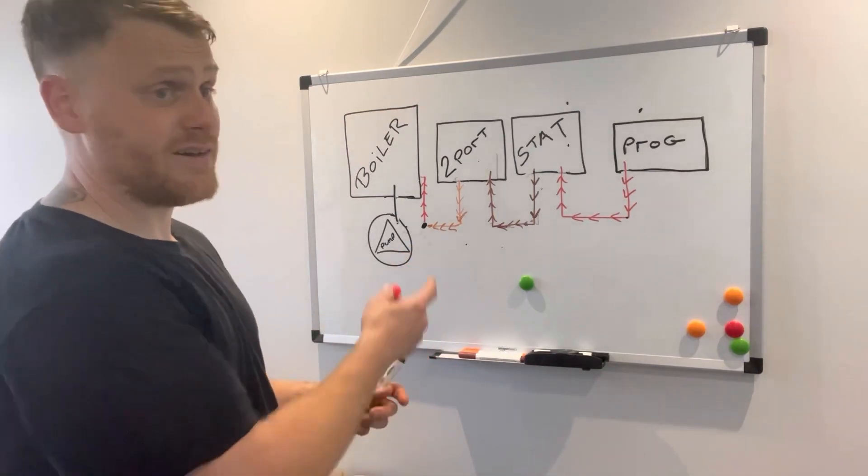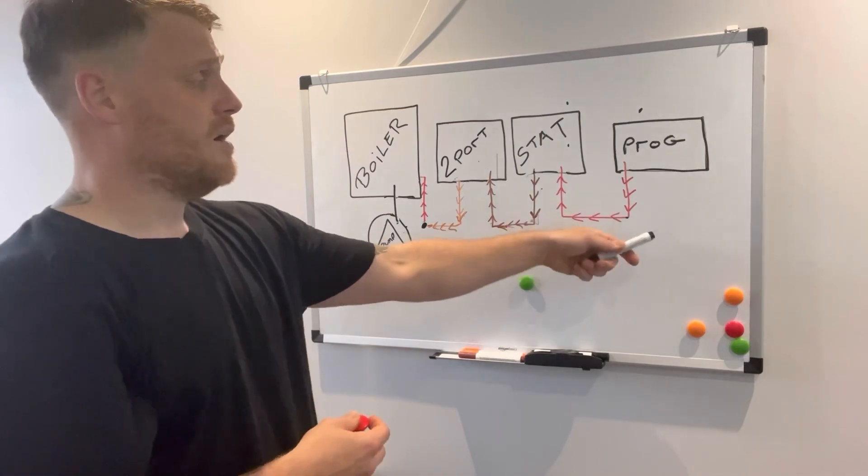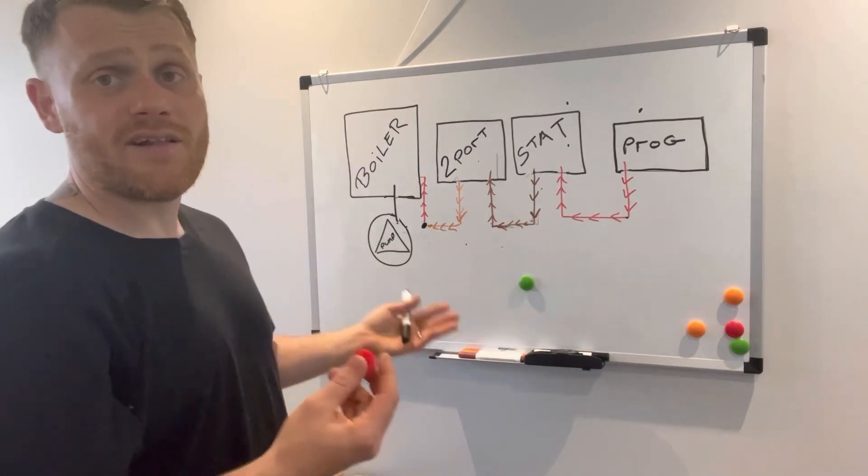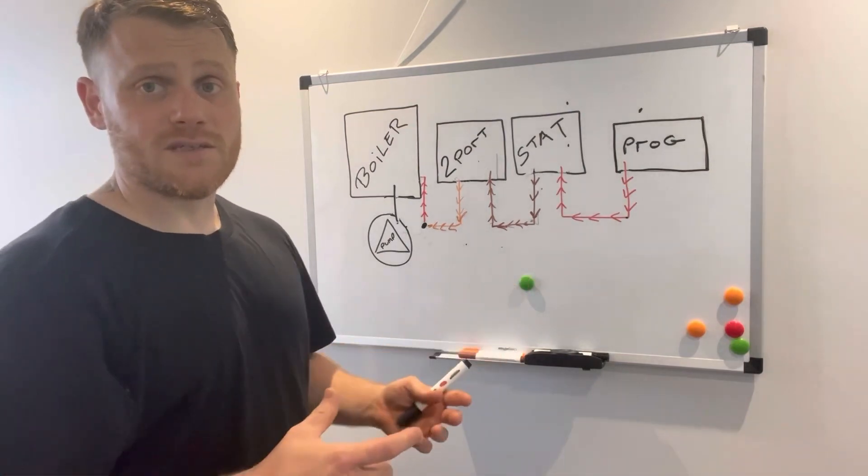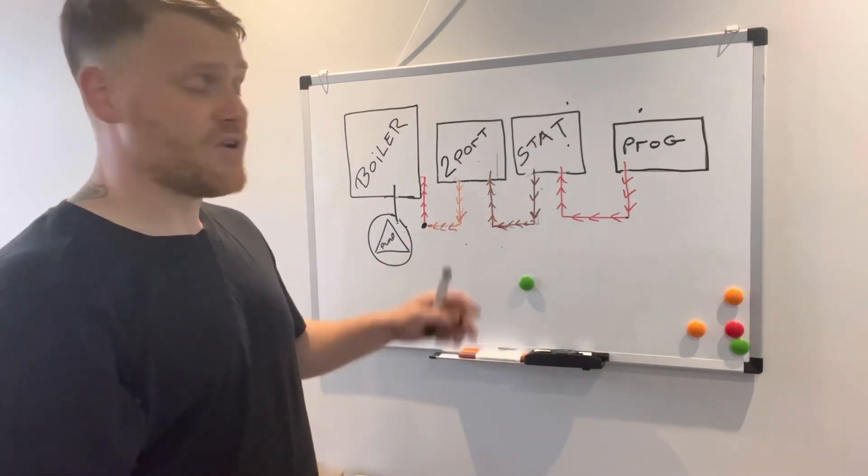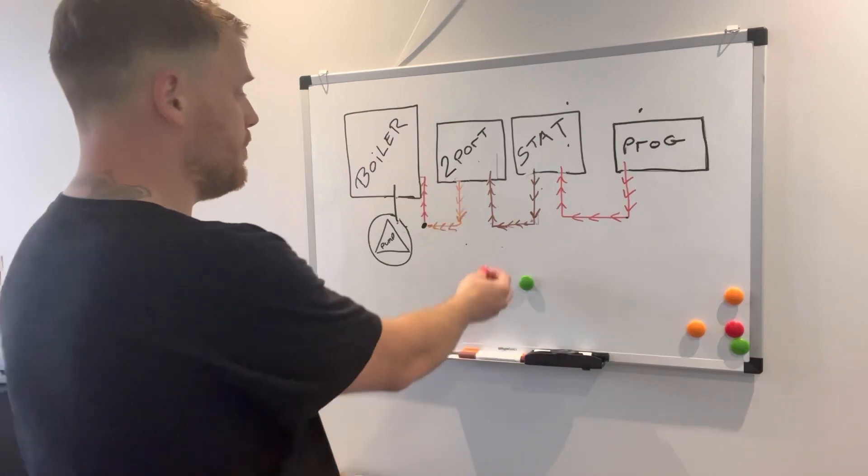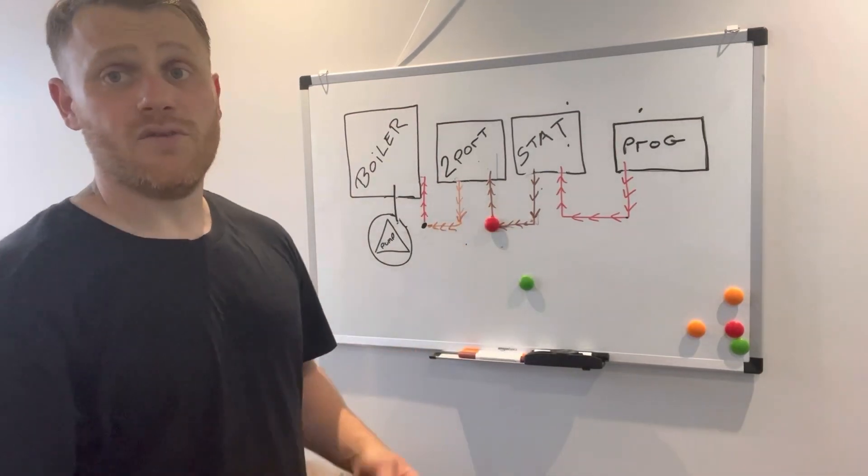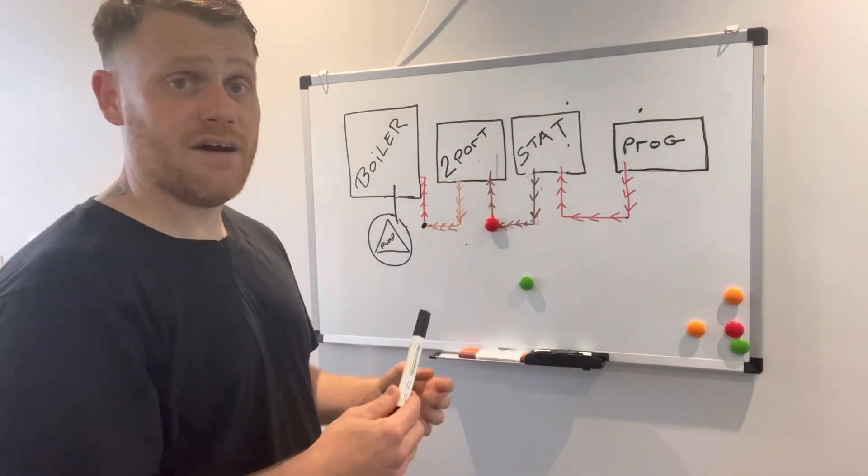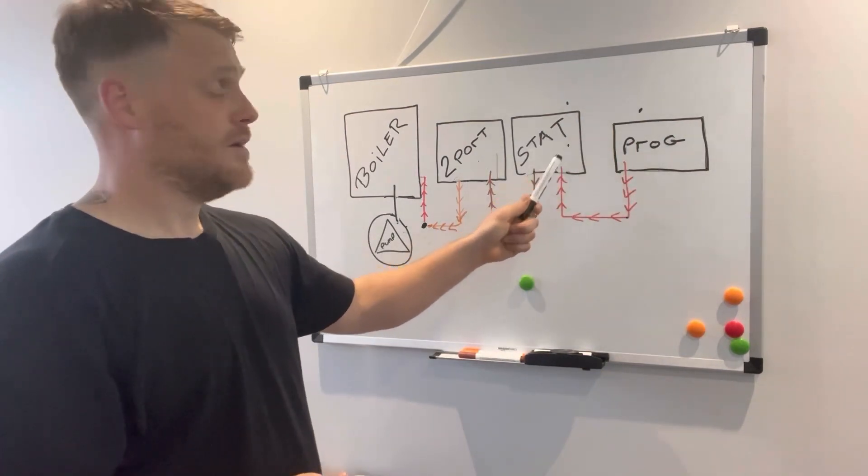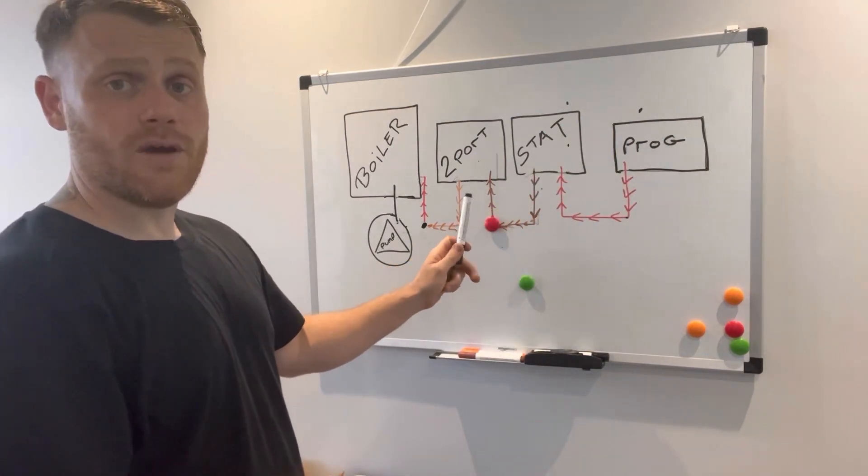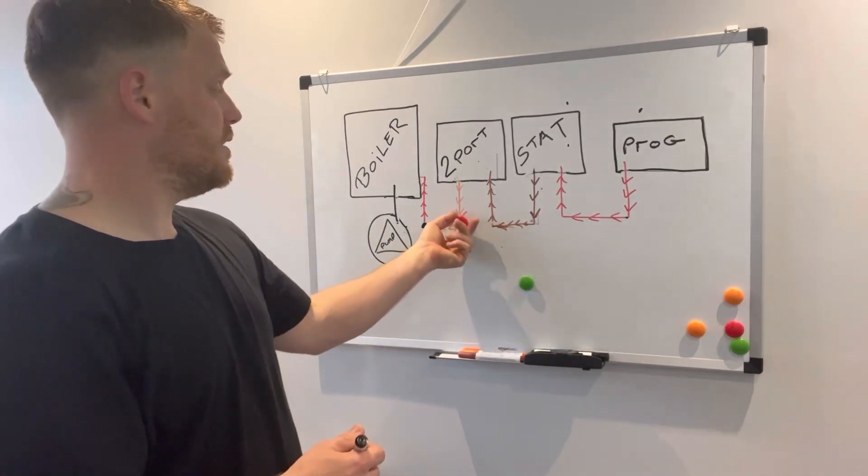That's how I do my fault finding, straight to the brown wire. You can start from the programmer and work your way around, but I just find it easier going to the junction box. Find the brown, put your probe on there. Have you got 240? If you have, we know that the programmer and the stat is fine.